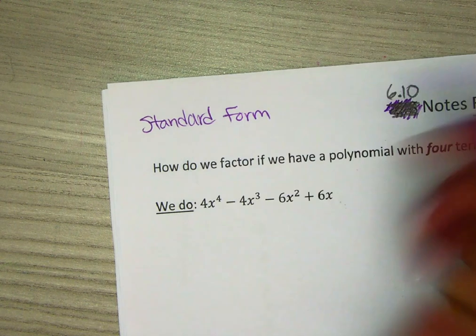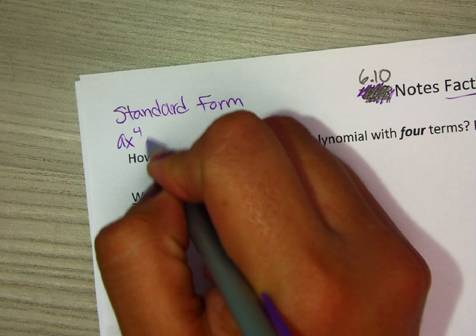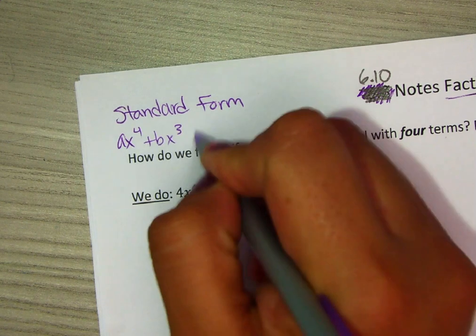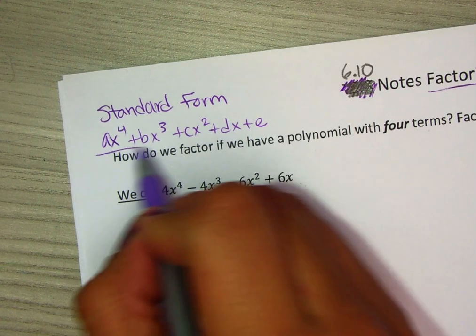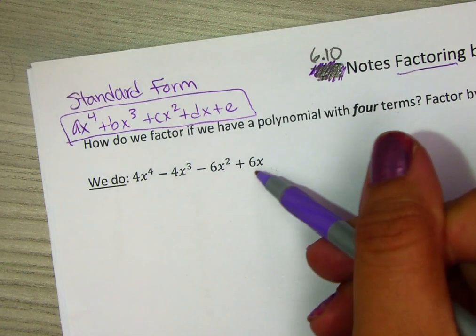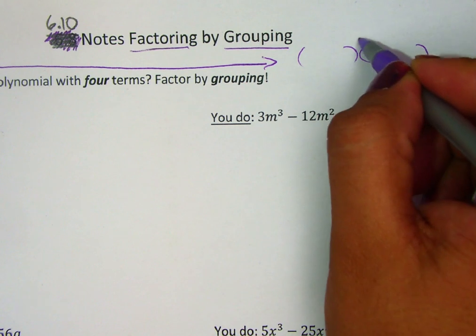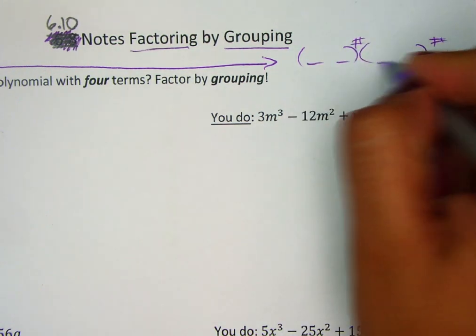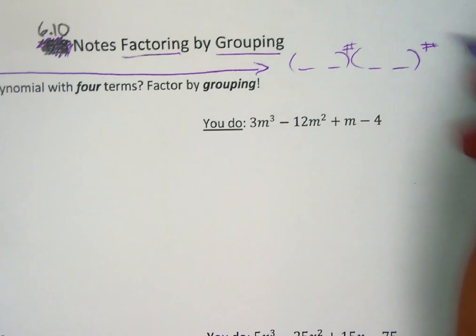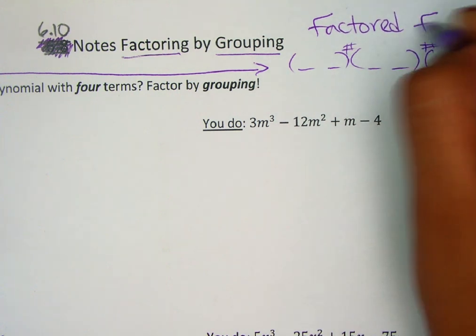Standard form is whenever you have ax to an exponent, for example 4th power, and then bx to the 3rd power, cx to the 2nd power, dx, and then e. This is standard form, and then you want to turn it into factored form, which is when you have the factors with exponents if needed. Most of the time they're binomials in here, but they could be trinomials. You want to have the skills to rewrite this into factor form.